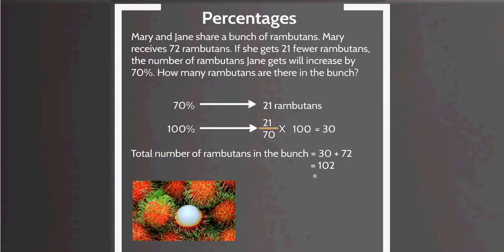Mary and Jane share a bunch of rambutans. Rambutans is a kind of fruit in Singapore — it is very sweet and they come in bunches. Mary receives 72 rambutans. If she gets 21 fewer rambutans, the number of rambutans Jane gets will increase by 70%. How many rambutans are there in the bunch?